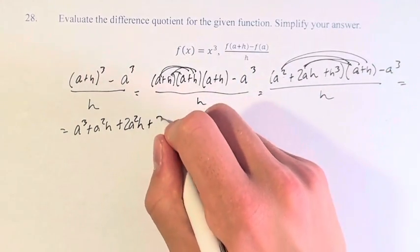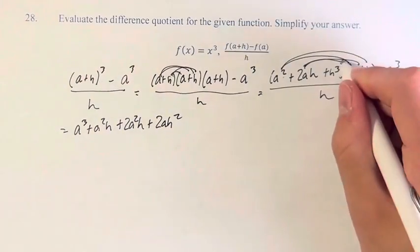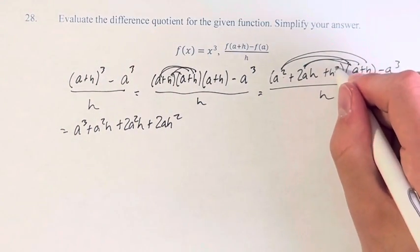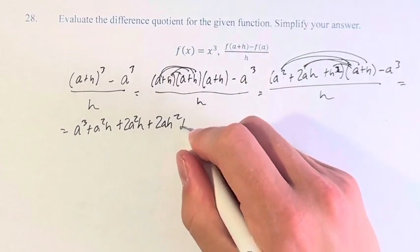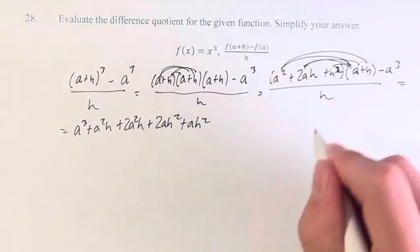Plus 2 a h squared plus another a h squared. Make sure that's an h squared, by the way.